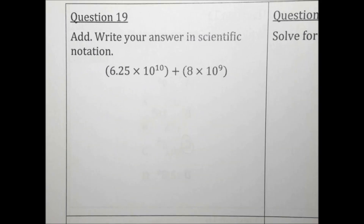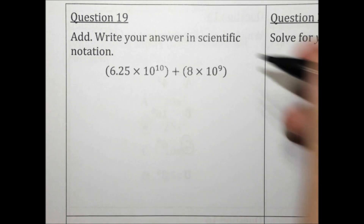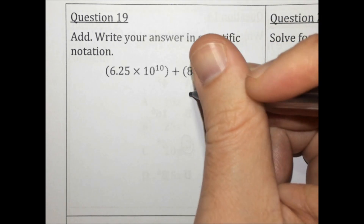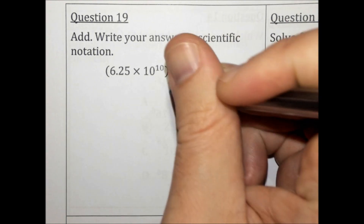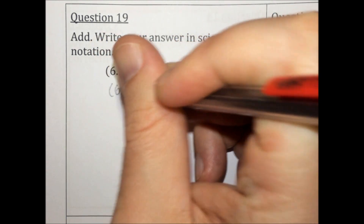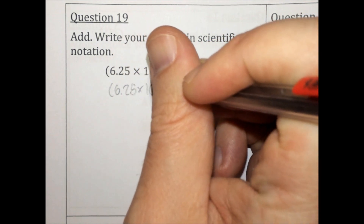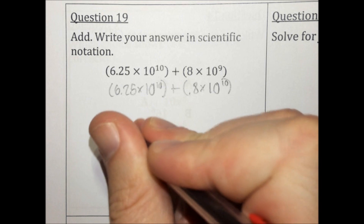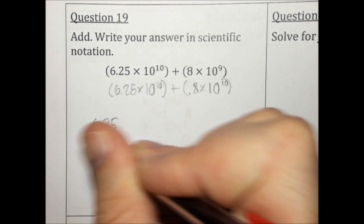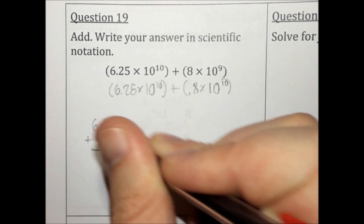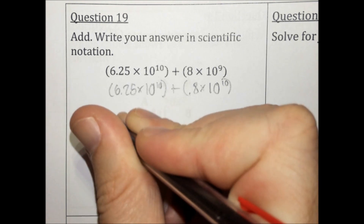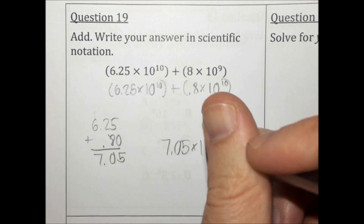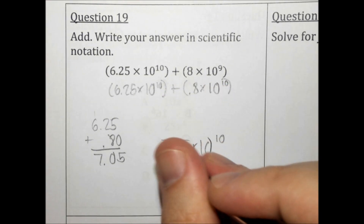Add and write your answer in scientific notation. To add, the exponents need to match, so let's make this a 10 to the 10th — the exponent got bigger, so the number needs to get smaller. We're not going to change the first number at all. Now that the exponents match, we add the numbers out front. 5 plus 0 is 5, 8 plus 2 is 10, giving us 7.05 times 10 to the 10th.